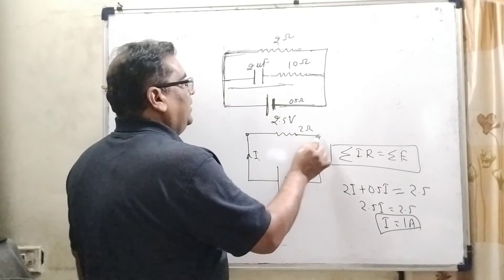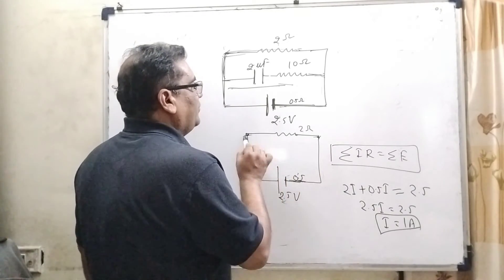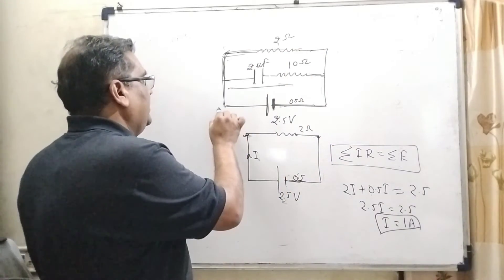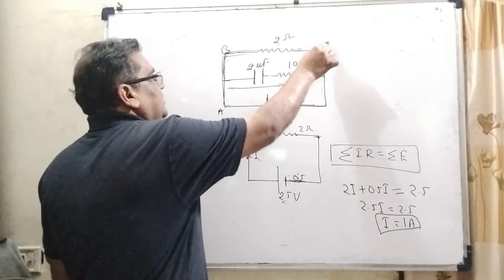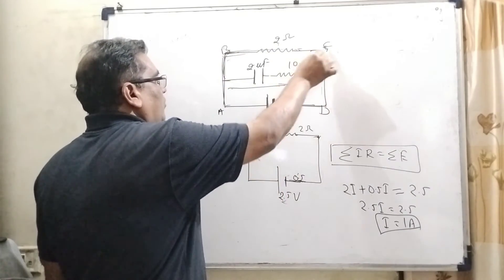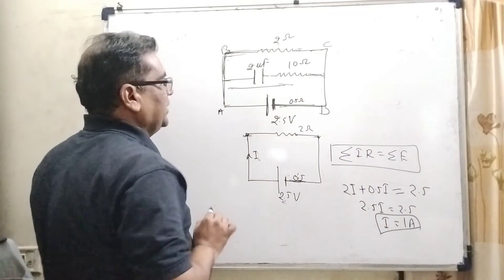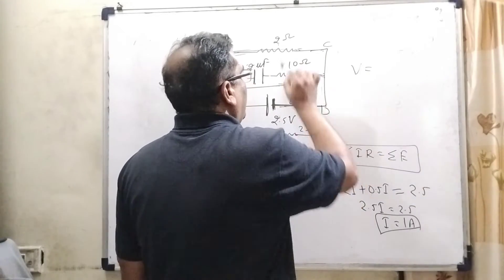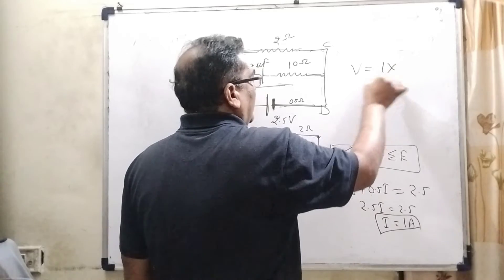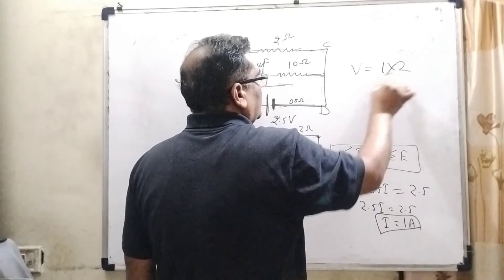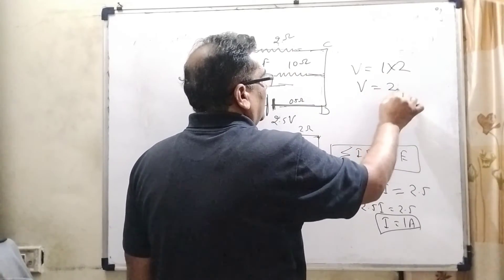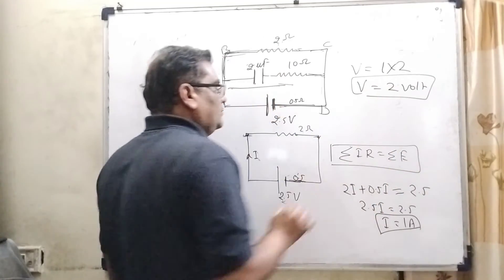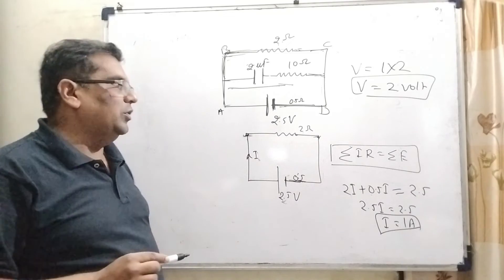Here in first we have to find out the potential between these ends. Let us say we have given the labeling A, B, C and D. We can find out the potential difference. What is the potential difference? V = IR. Here I, that is 1 ampere, and what is the resistance? That is 2. Then V equal to 2 volt. Here we get potential V equal to 2 volt.